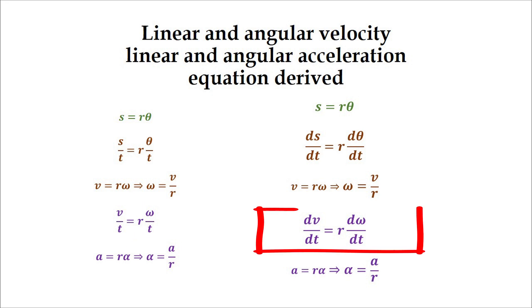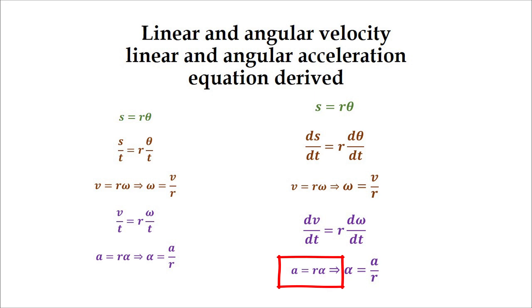Similarly, in differential form, take the derivative of this equation with respect to time, which will give us linear acceleration equal to r times angular acceleration. Further solving, we will get angular acceleration alpha is equal to linear acceleration divided by r.